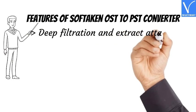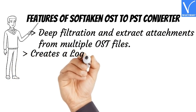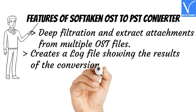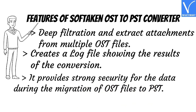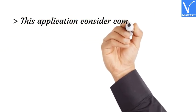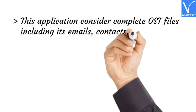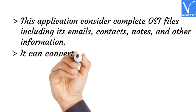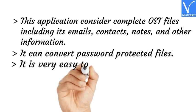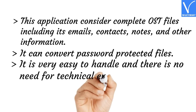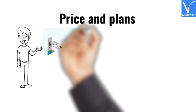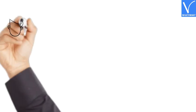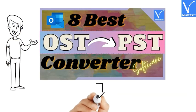Features of Soft Taken OST to PST Converter: Deep filtration and extraction of attachments from multiple OST files. Creates a log file showing the results of the conversion. Provides strong security for data during migration of OST files to PST. Considers complete OST files including emails, contacts, notes, and other information. Can convert password-protected files. Very easy to handle with no need for technical expertise to export OST files into PST format. The price and plans are exhibiting on the screen. The product link is provided in the description. For more information, visit our article — link provided in the description.